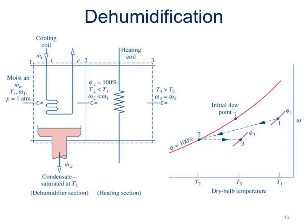Now let's look at the dehumidification process. If we have a dehumidifier in a house, some moist air comes in — some mass flow rate of air, some humidity ratio — all happening at one atmosphere. The moist air hits a cooling coil, which cools it until it hits the dew point, and then some condensate comes out at temperature T2. What continues on is at a lower temperature but completely saturated — relative humidity at 100% — and because we lost some vapor from the air, the humidity ratio is smaller at state 2 than at state 1.